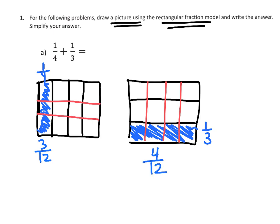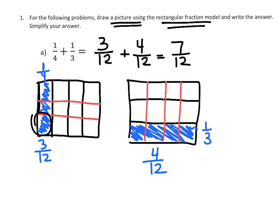Now, instead of 1/4, I now have 3/12. And instead of 1/3, I now have 4/12. Suddenly I have common denominators. So I now have 3/12 plus 4/12, and I can add those together and get 7/12 — 1, 2, 3, plus 4, 5, 6, 7 — so I'm left with 7/12 total.